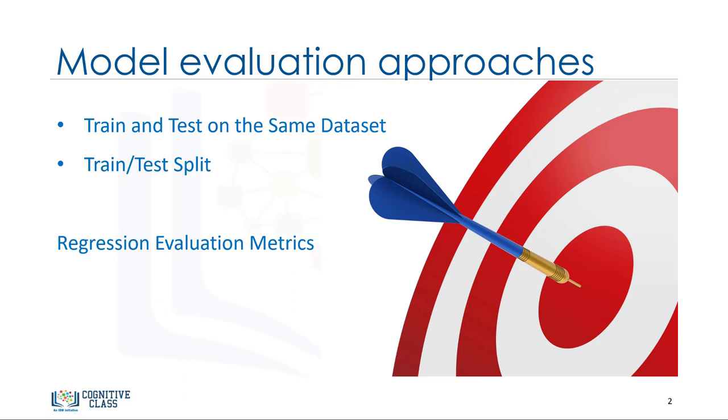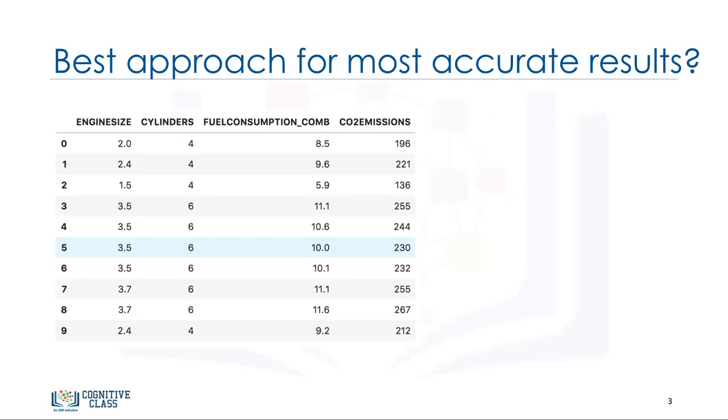Also, we'll introduce some metrics for accuracy of regression models. Let's look at the first approach. When considering evaluation models, we clearly want to choose the one that will give us the most accurate results. So the question is, how can we calculate the accuracy of our model? In other words, how much can we trust this model for prediction of an unknown sample using a given dataset and having built a model such as linear regression?